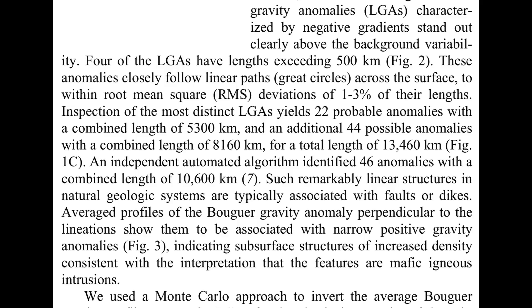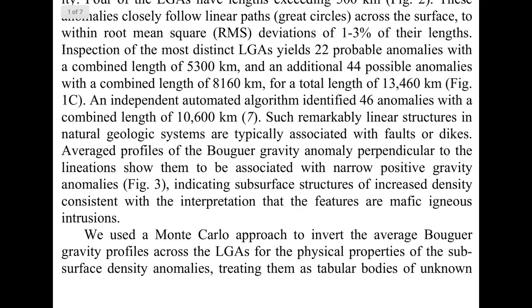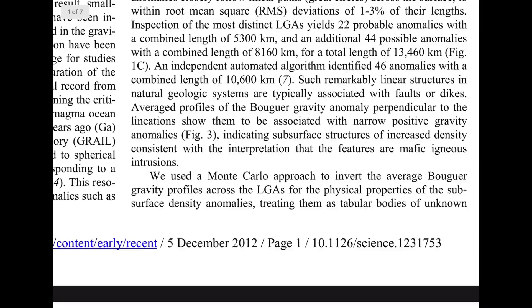Such remarkably linear structures in natural geologic systems are typically associated with faults or dikes. Average profiles of the Bouguer gravity anomaly perpendicular to the lineations show them to be associated with narrow positive gravity anomalies, indicating subsurface structures of increased density, consistent with the interpretation that the features are mafic igneous intrusions. A Monte Carlo approach was used to invert the average Bouguer gravity profiles across the PLGAs for the physical properties of the subsurface density anomalies, treating them as tabular bodies of unknown top depth, bottom depth, width, and density contrast.